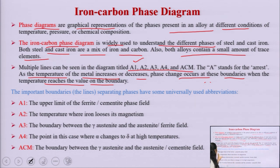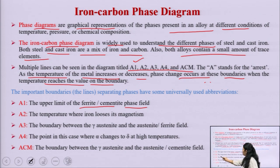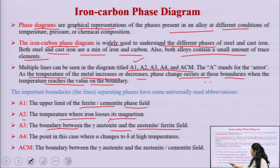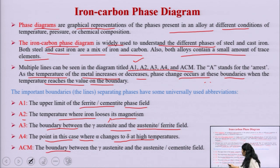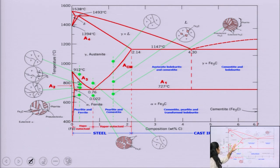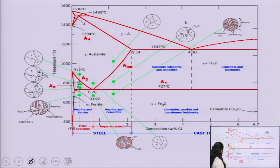The lines in the iron carbon diagram are labeled A1, A2, A3, A4, and Acm — where 'A' stands for 'arrest,' meaning the phase changes at these boundaries as temperature increases or decreases. A1 shows the upper limit of the ferrite or cementite phase. A2 shows the temperature where iron loses its magnetism. A3 shows the boundary between gamma (austenite) and ferrite fields. A4 shows the point where alpha changes to delta at higher temperature. Acm shows the boundary between gamma and the austenite-cementite field.